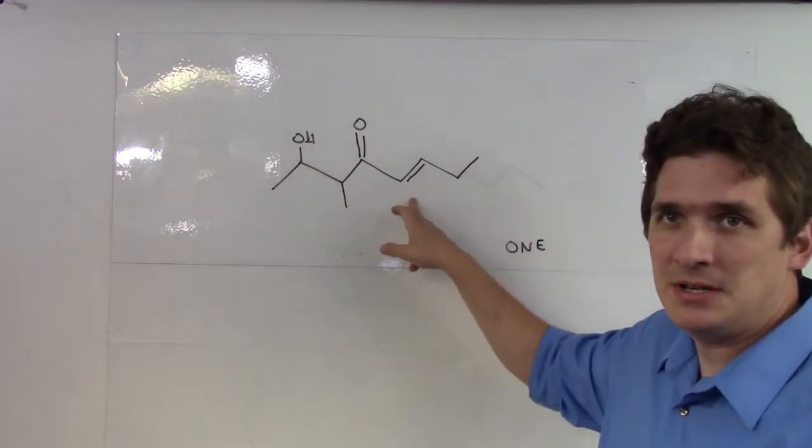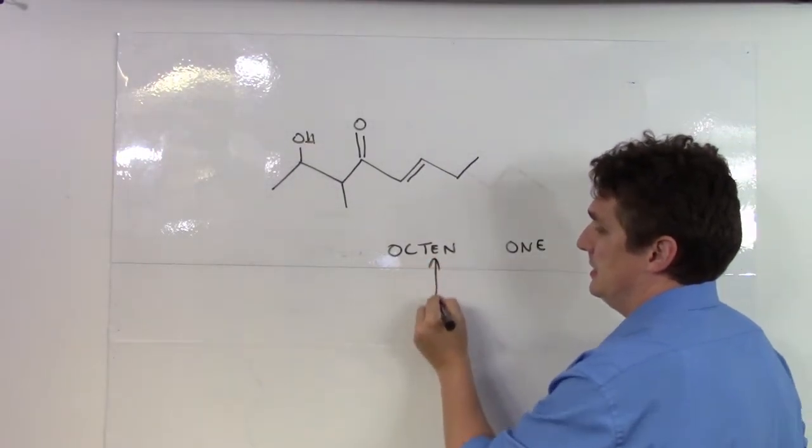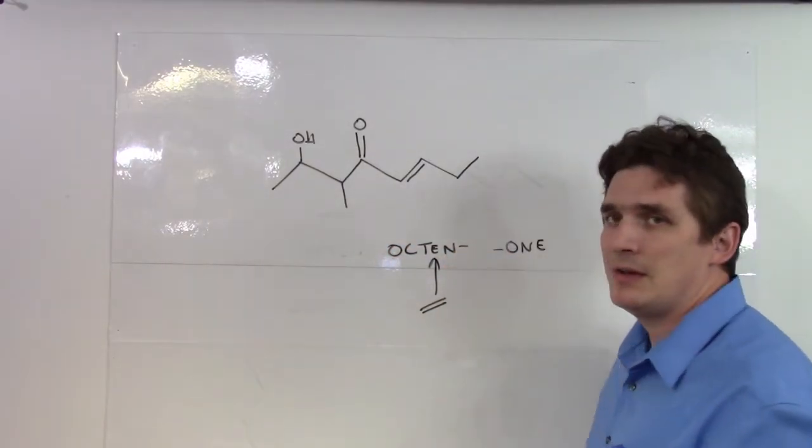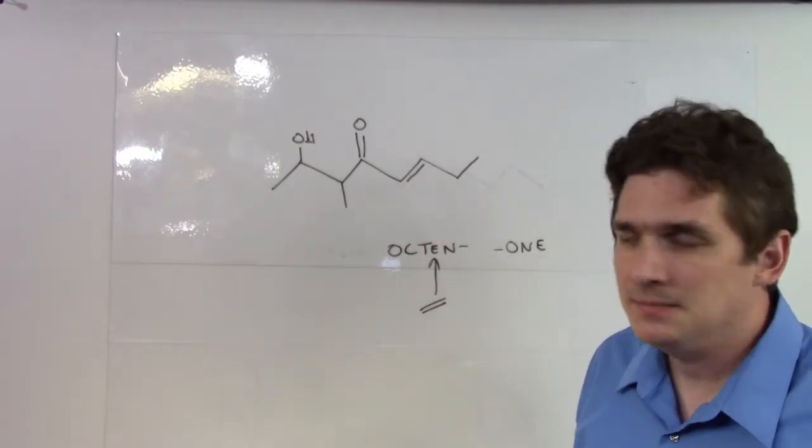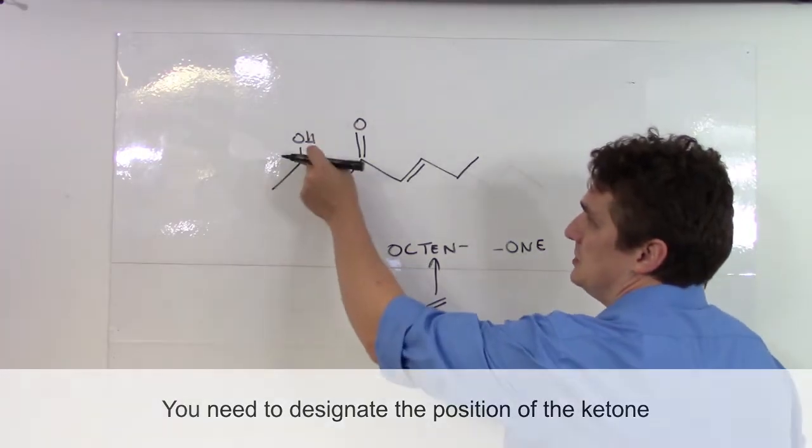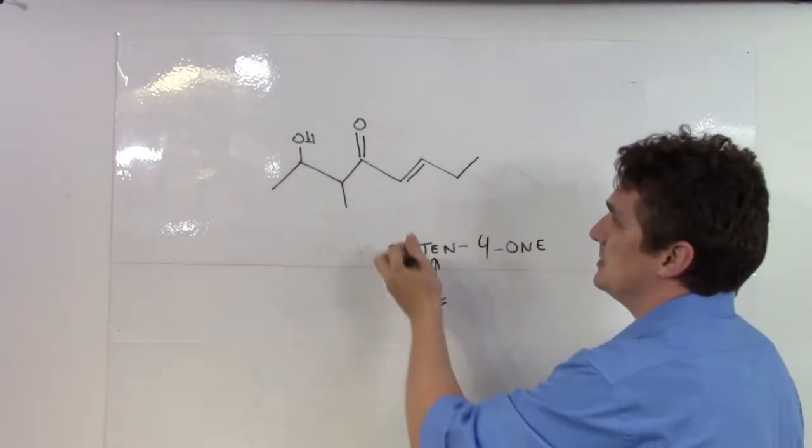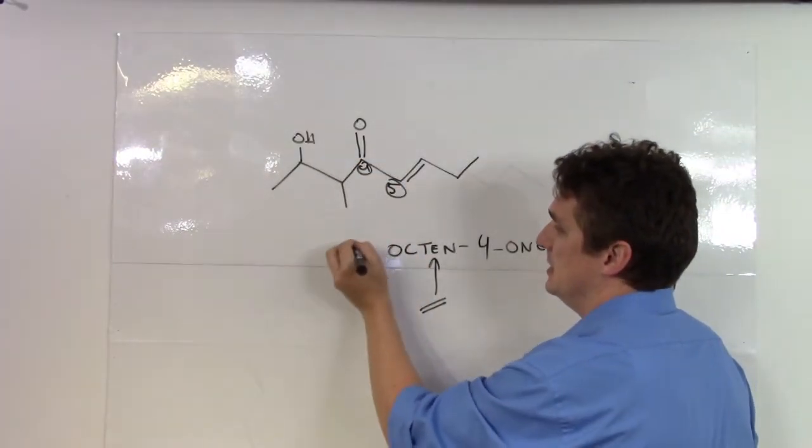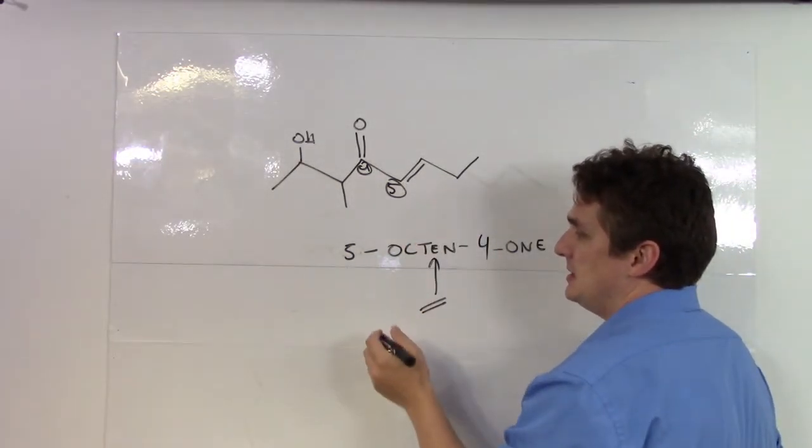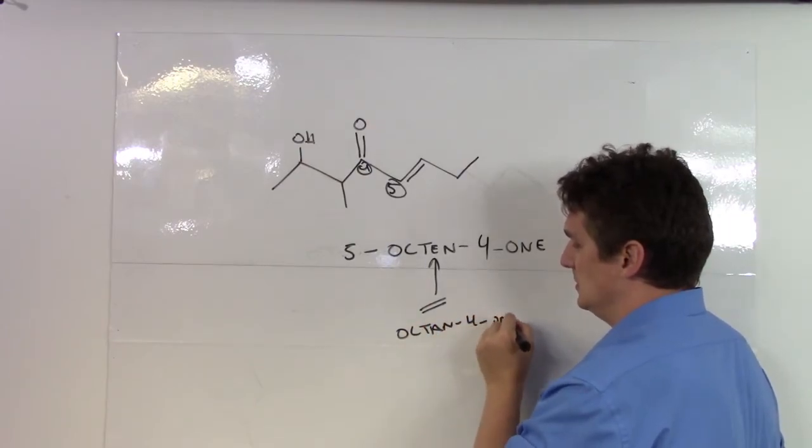Now because I have a double bond here, I would have an E here to designate the double bond. If I did not have the double bond, I would just leave that out. But regardless of whether or not you have an alkane, alkyne, or alkene, you need to specify the position of the ketone, and it needs to take the priority. So it's one, two, three, four, one. Now because we have an alkene here, we also need to specify the start of the double bond. This would be five octene, four, one. If there was no double bond here, it would just be octene, four, one.